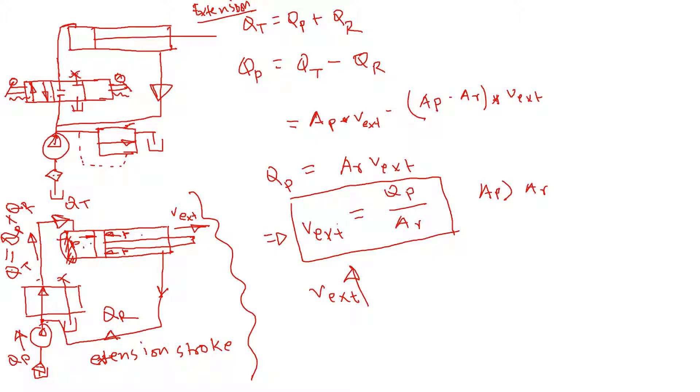And also on the blank side, so the blank side and also the rod side will have the same pressure. If we have the same pressure both sides, so we can calculate the blank end.